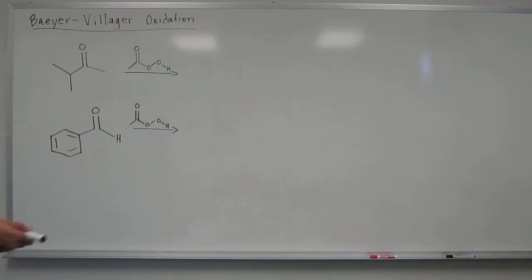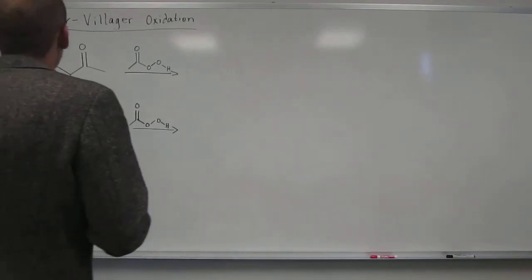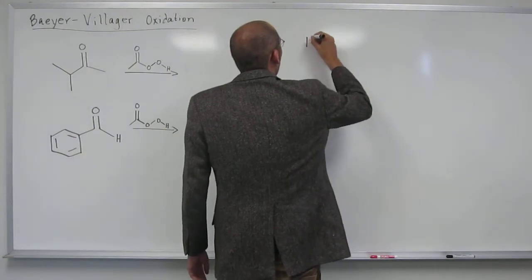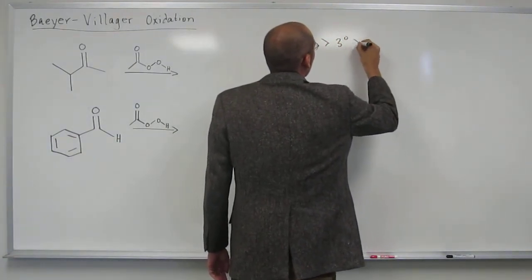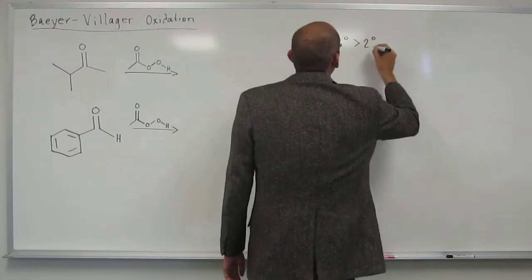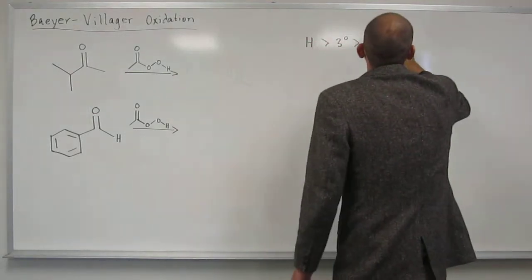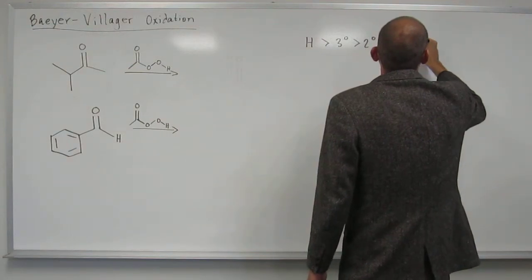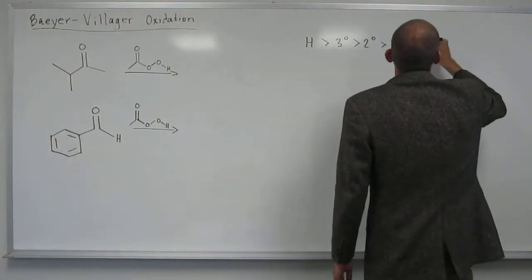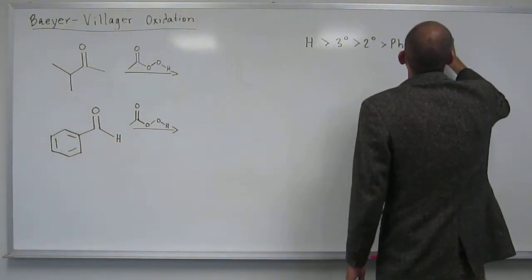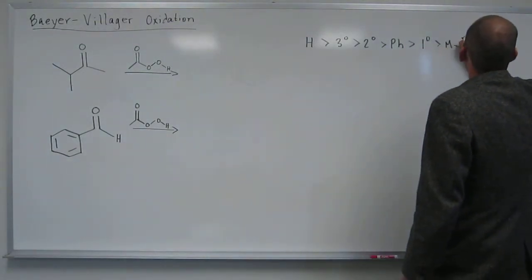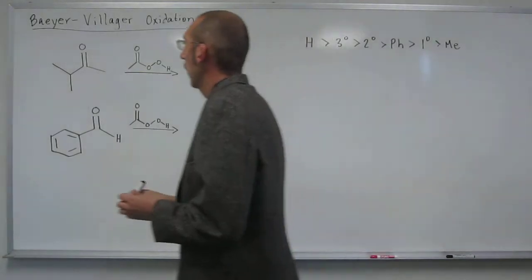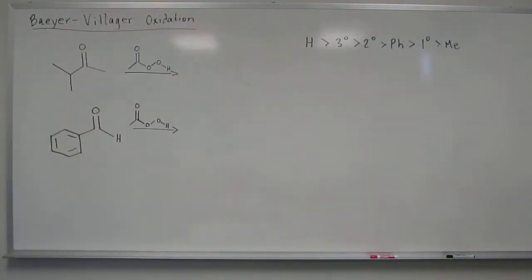So if you remember your migratory aptitude, it's going to be H first, then tertiary, then secondary, then phenyl, then primary, then methyl. So you have to remember that, of course.